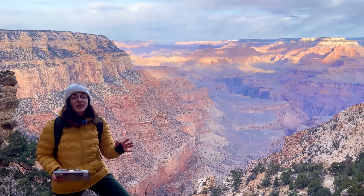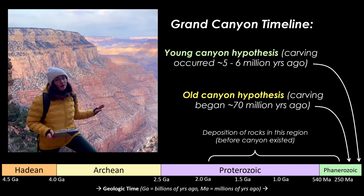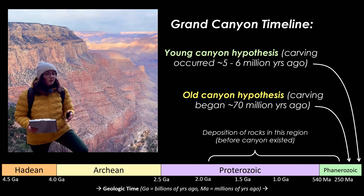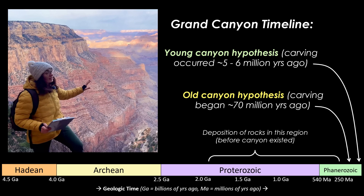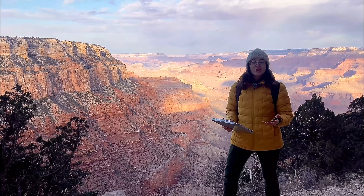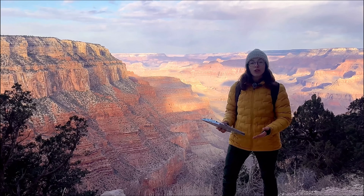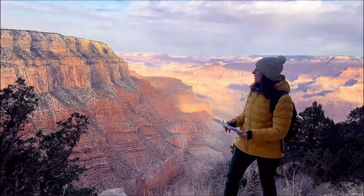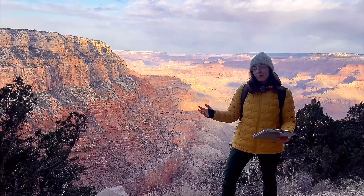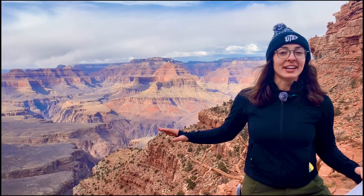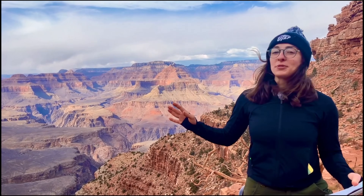There are two main hypotheses for the timing of canyon erosion. The Young Canyon Hypothesis suggests the Colorado River carved the canyon within the last 6 million years. The Old Canyon Hypothesis argues that different segments of the canyon formed independently over tens of millions of years and later merged. Recent research using thermochronology — measuring the thermal history or cooling of rocks — supports the idea that parts of the canyon are more ancient than others. So it's possible that ancient rivers began carving the canyon long before the Colorado River system took over.